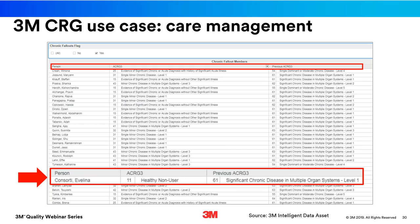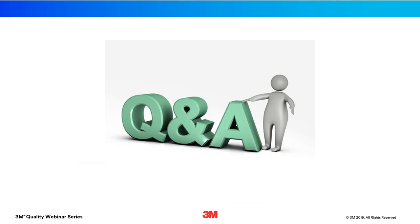In addition to risk adjustment and payment, CRGs can be used for a variety of population health initiatives such as case management. A chronic fallout report flags individuals who have lost their chronic CRG status — for example, someone who went from having two chronic diseases to being a healthy non-user from one time period to the next. Since we would not expect chronic issues to resolve, this can indicate either a potential gap in documentation or a gap in care that can be addressed. Thank you all, and we hope you now have a better understanding of 3M CRGs, how they compare with HCCs, and where they fit for coding and CDI professionals as we move toward risk-based payment.